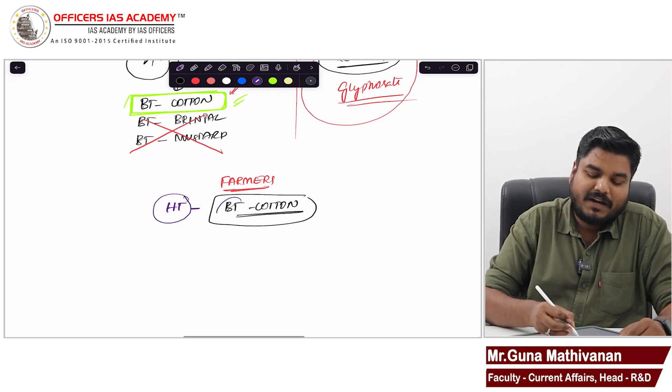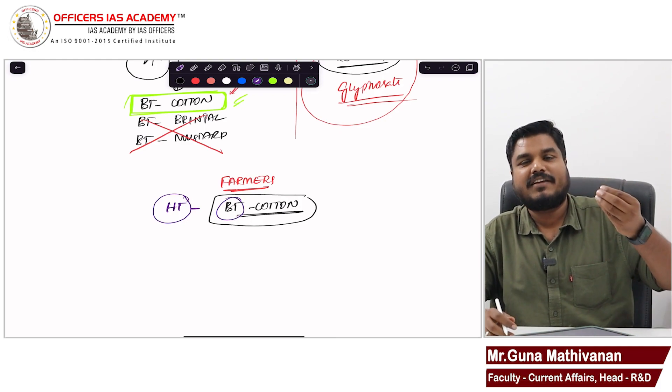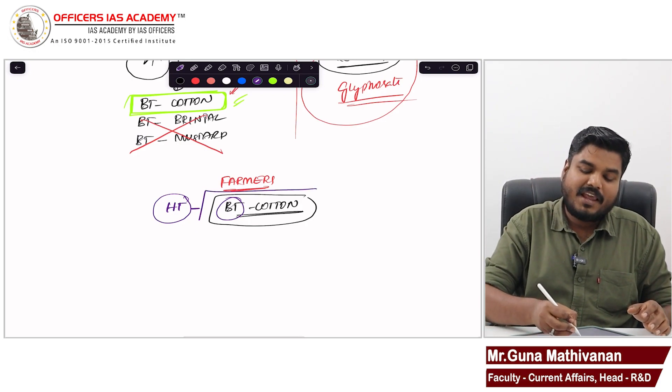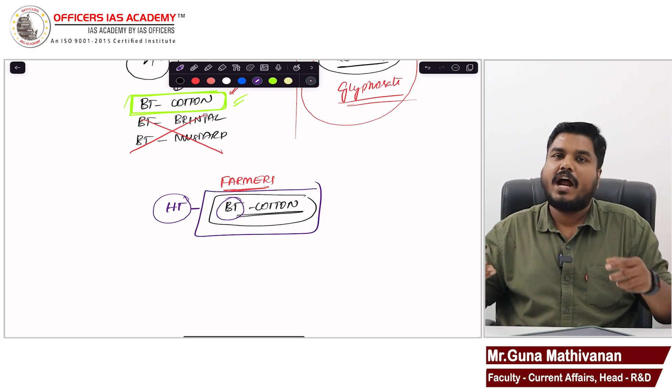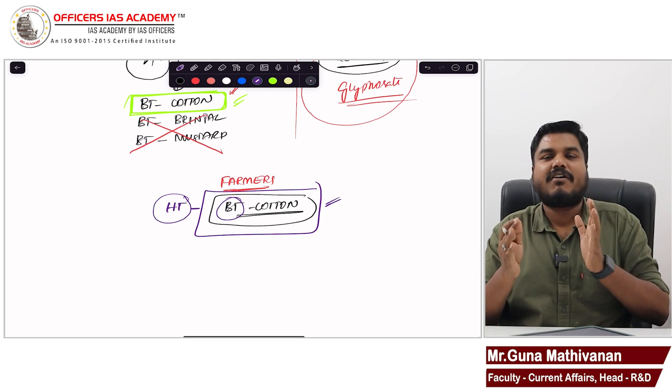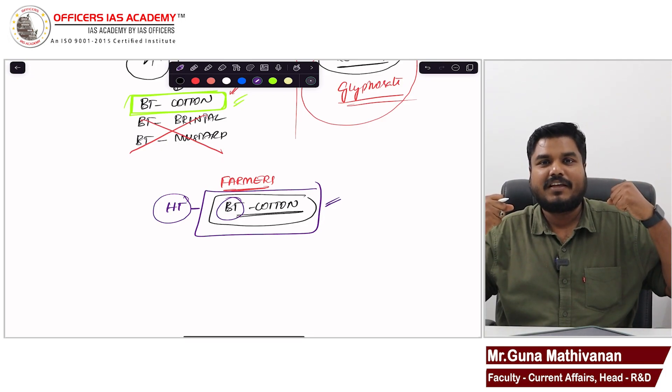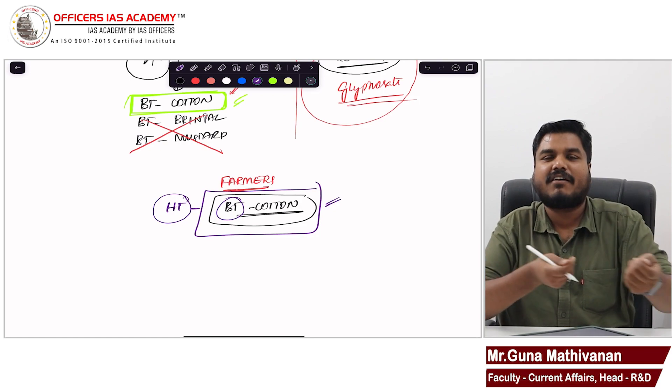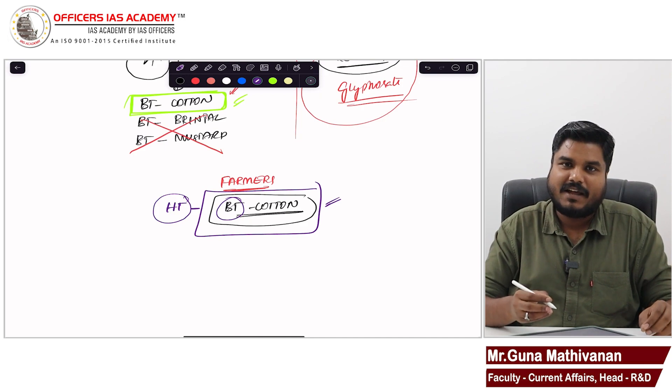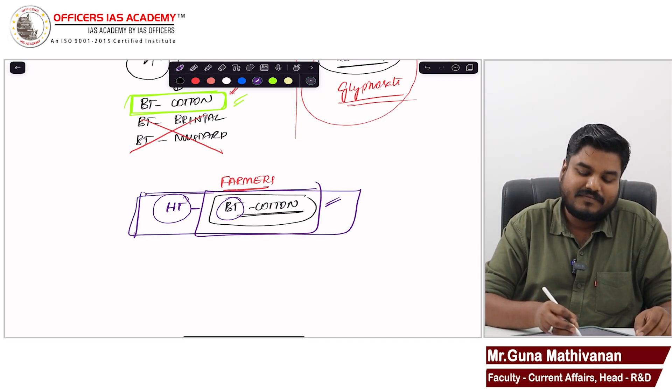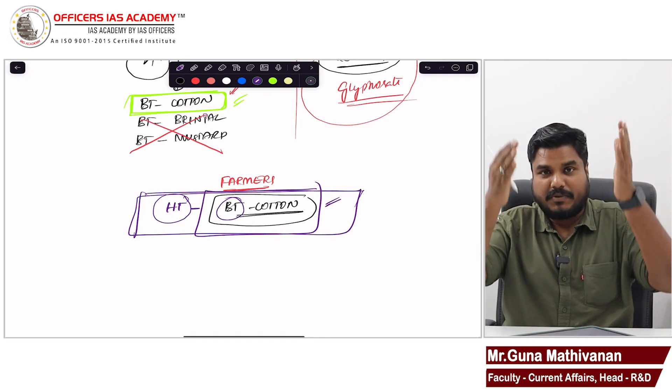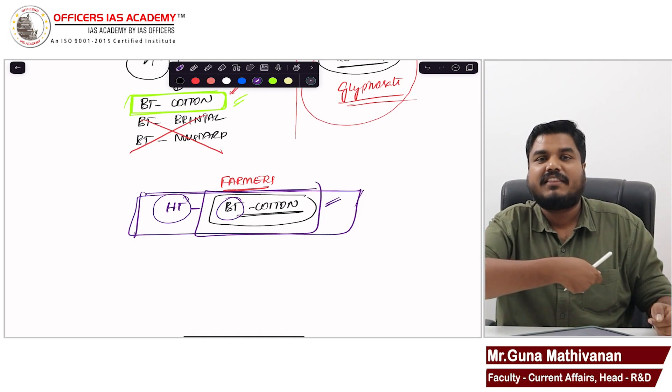Farmers are requesting the genetic engineers that why don't you once again make this cotton stronger. You add some genes, take some bacteria, somehow do some genetic modification, make the existing Bt cotton plant more powerful. How much powerful? Even after spraying herbicide, the cotton plant should not be killed. So the farmers started demanding HT Bt cotton.